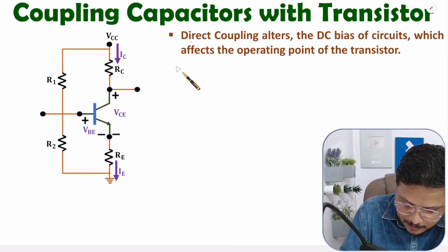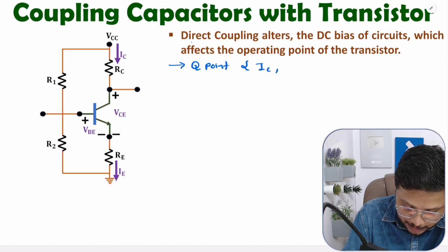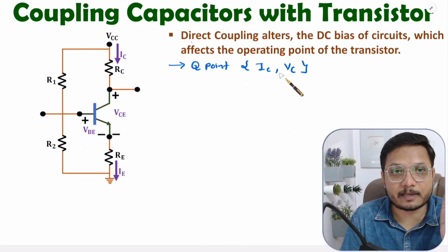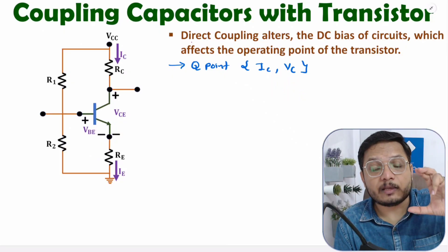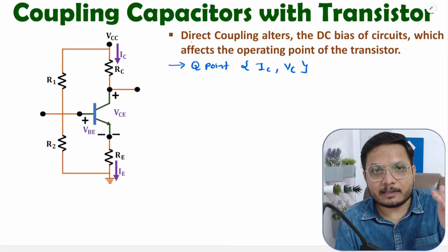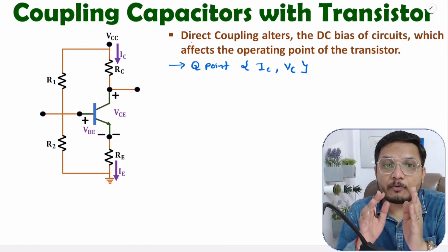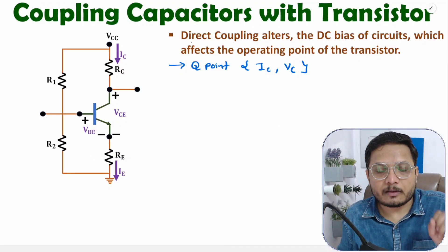Operating Point means Q Point. The Q Point of this circuit is defined by Output Current IC and Output Voltage VC — so Q Point is IC and VC. If this Operating Point gets shifted, there are higher chances of clipping waveforms at the output side. So the output waveforms may not be proper if your Operating Point is shifted.